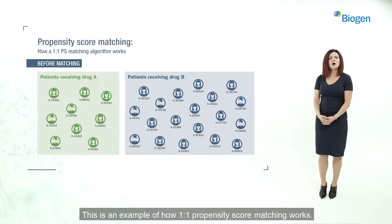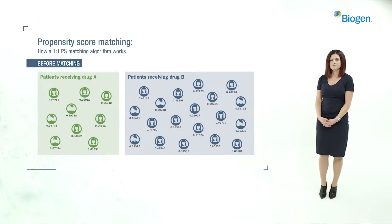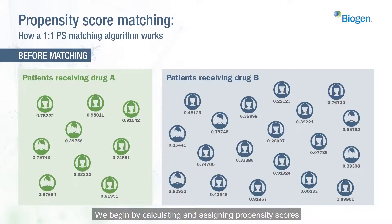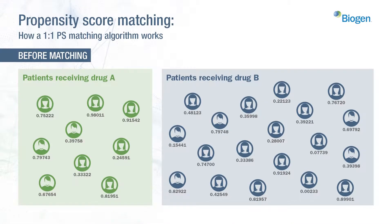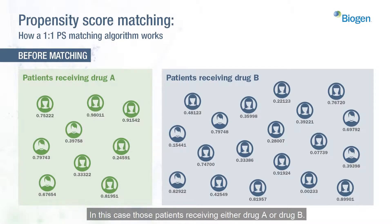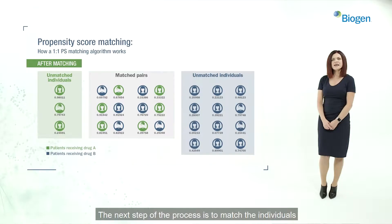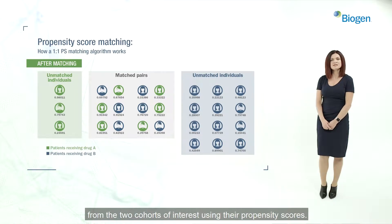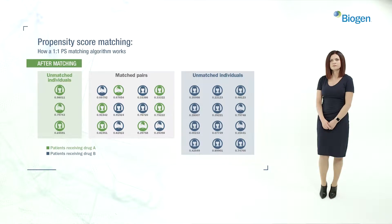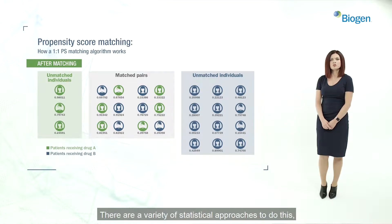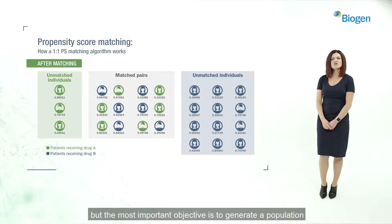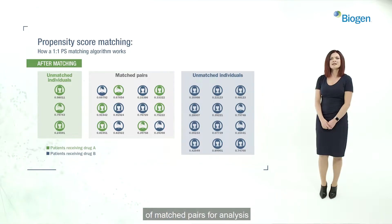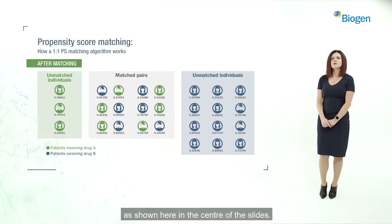This is an example of how one-to-one propensity score matching works. We begin by calculating and assigning propensity scores to every individual in the two groups to be compared — in this case, those patients receiving either drug A or drug B. You will notice the differing numbers in each group. The next step is to match the individuals from the two cohorts using their propensity scores.